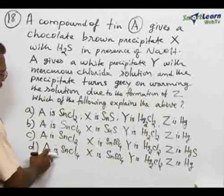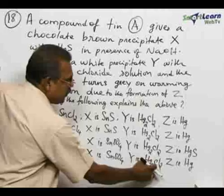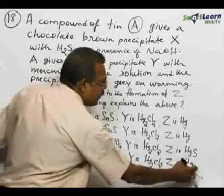And option D, A is SnCl4, X is SnSO4, Y is Hg2Cl2, Z is Hg.